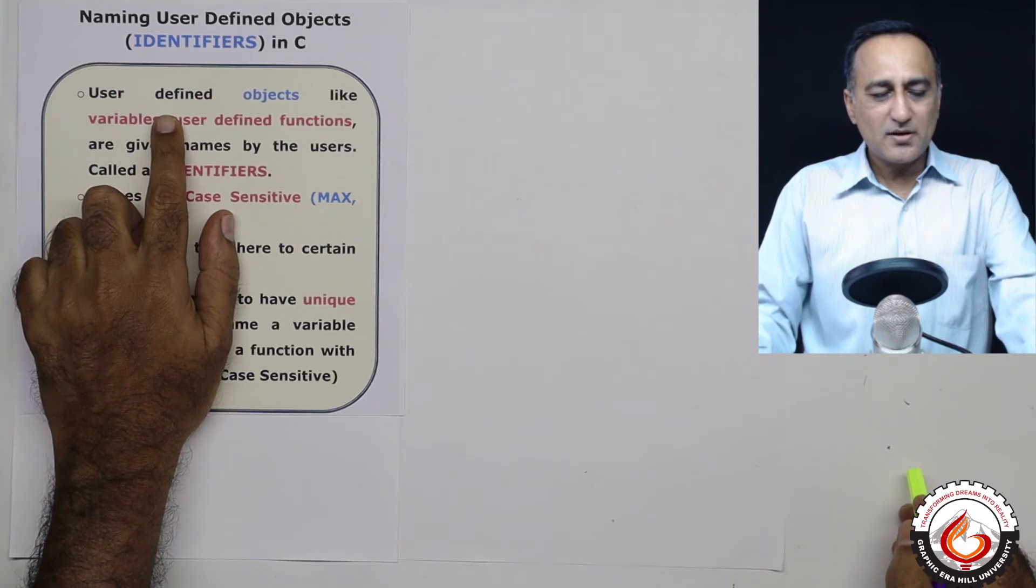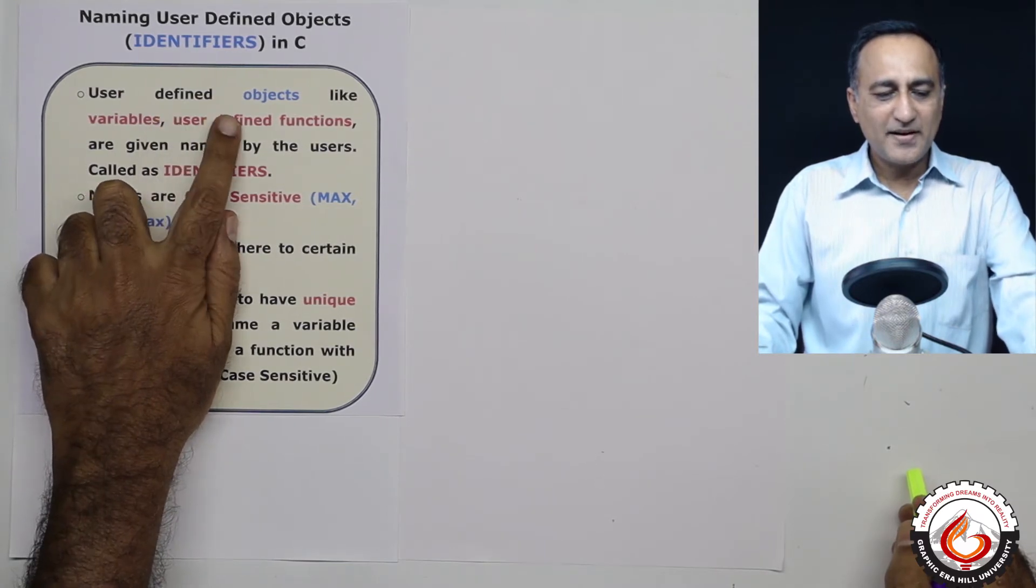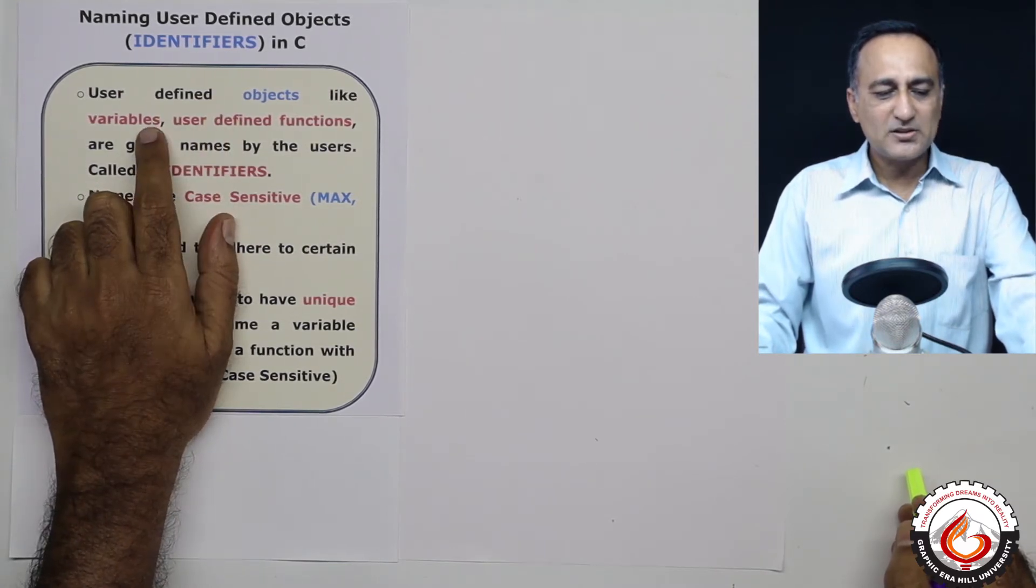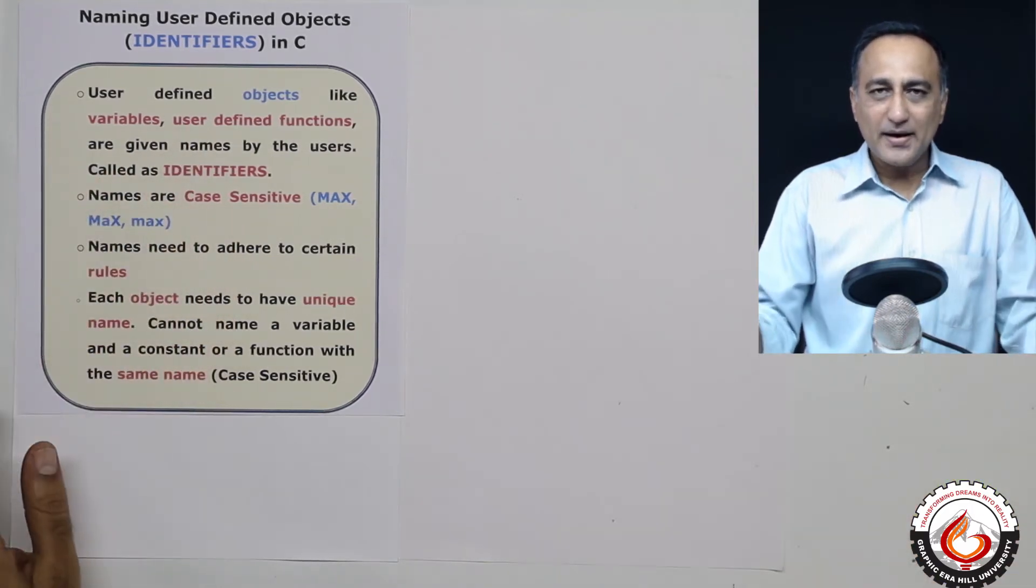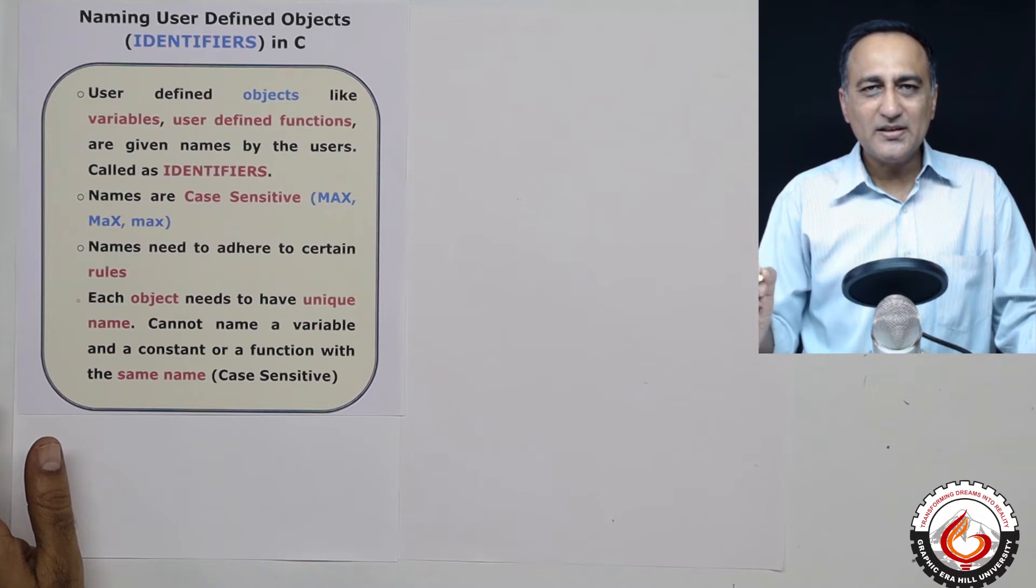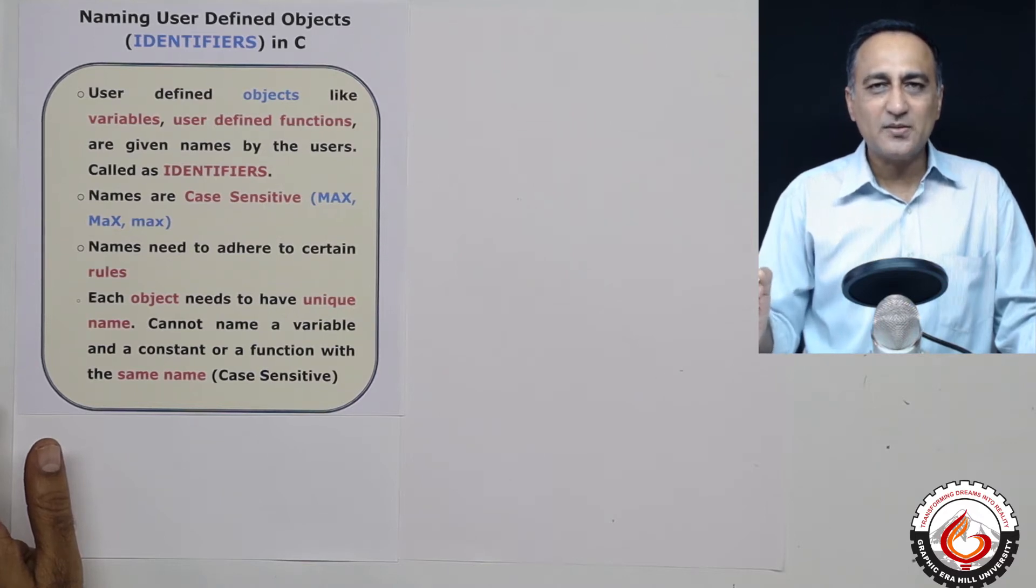When a user defines objects like variables, functions, and constants, they need to adhere to certain rules and regulations in terms of how you can name them and what names are sensible to the compiler.